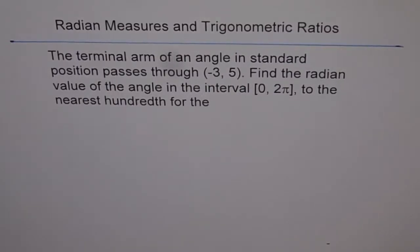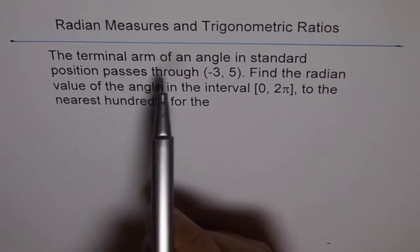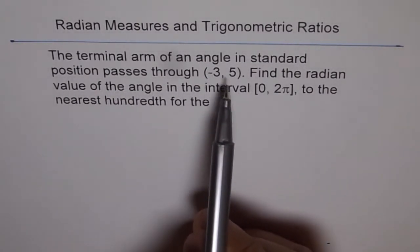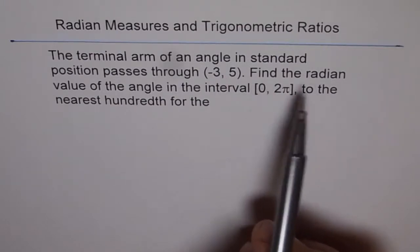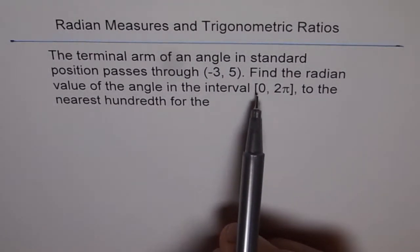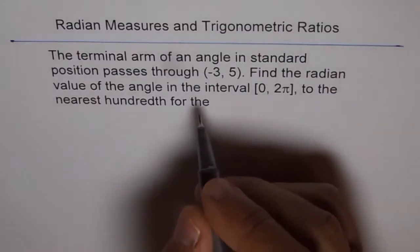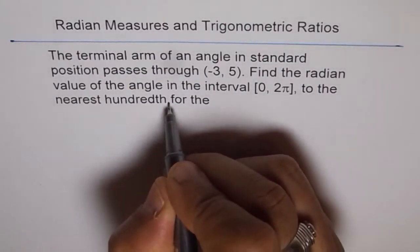Radian measures and trigonometric ratios. The terminal arm of an angle in standard position passes through minus 3, 5. Find the radian value of the angle in the interval 0 to 2π to the nearest hundredth.